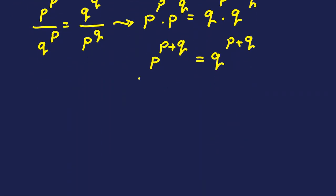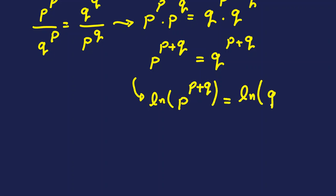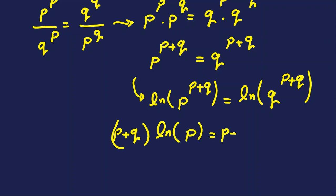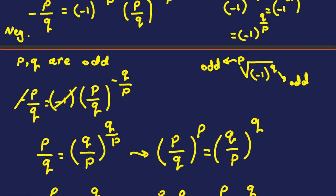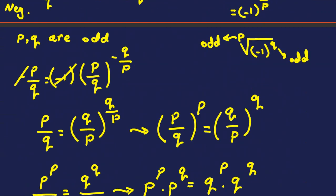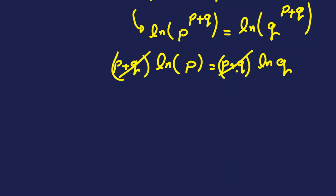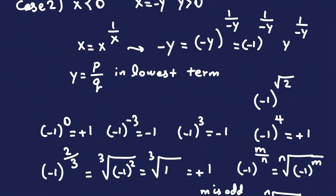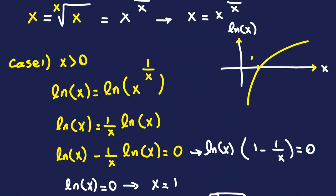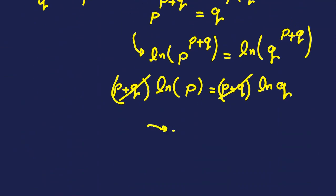We want to prove p = q. Since the equation has variables in the exponents, we take ln of both sides: (p+q) · ln p = (p+q) · ln q. Since p and q are positive odd integers, p+q is positive and nonzero, so we can cancel it. This gives ln p = ln q. Since ln is strictly increasing (one-to-one), we conclude p = q.